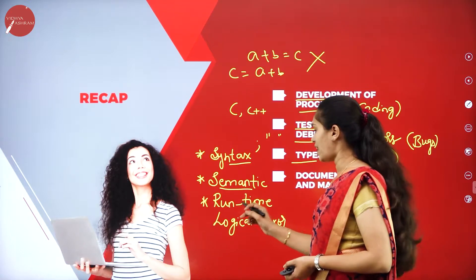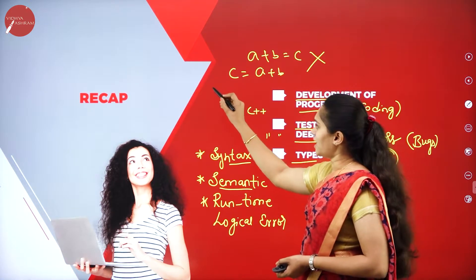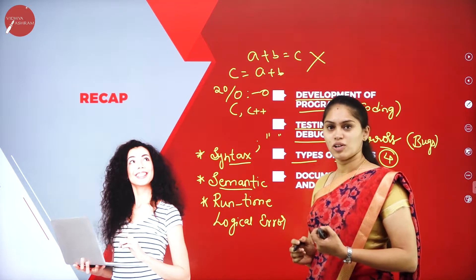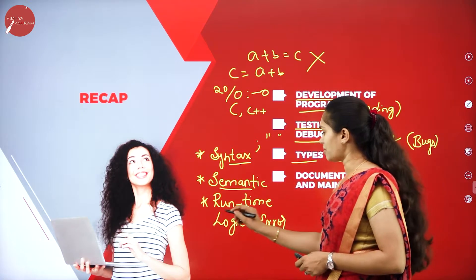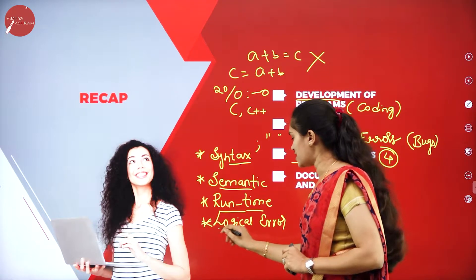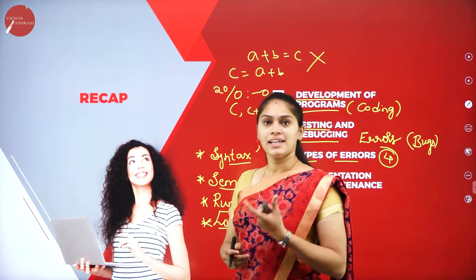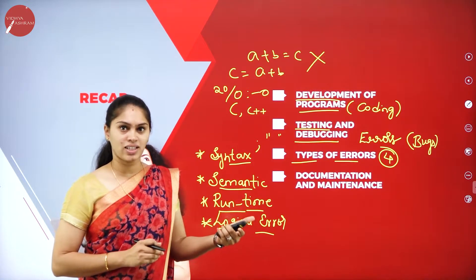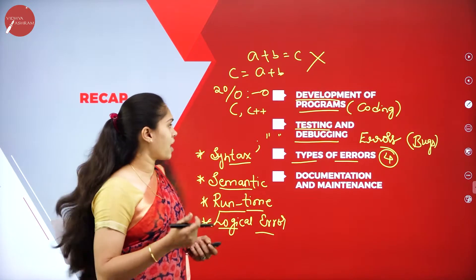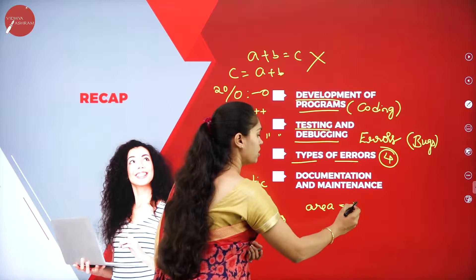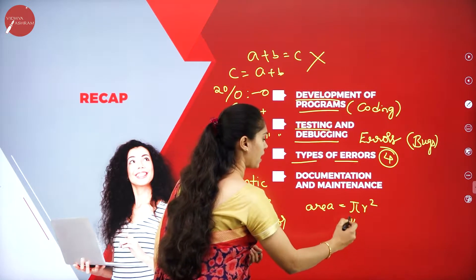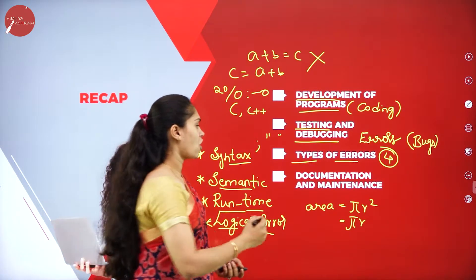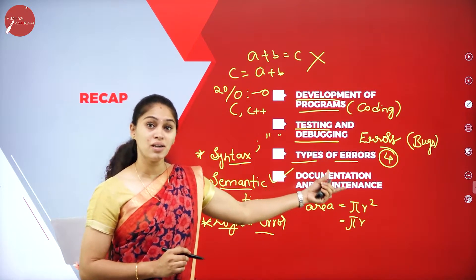A runtime error occurs during execution of a program — for example, dividing a number by zero. A logical error is a mistake in the logic itself; it is not detected by the compiler and nothing appears on screen, but the desired output is not produced. For instance, computing pi*r instead of pi*r² for the area of a circle.